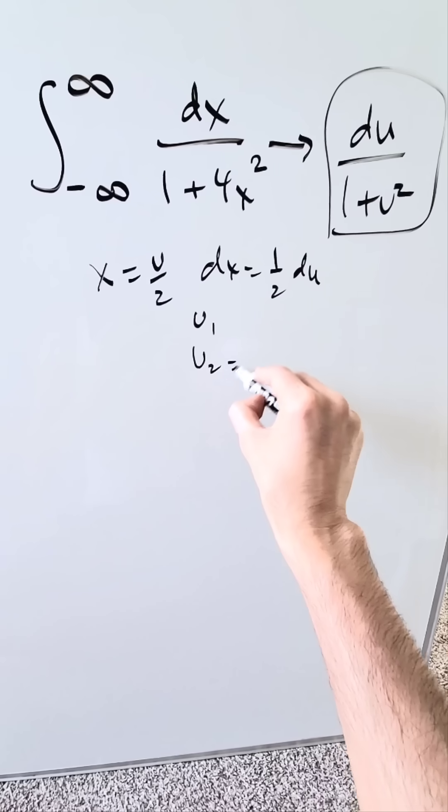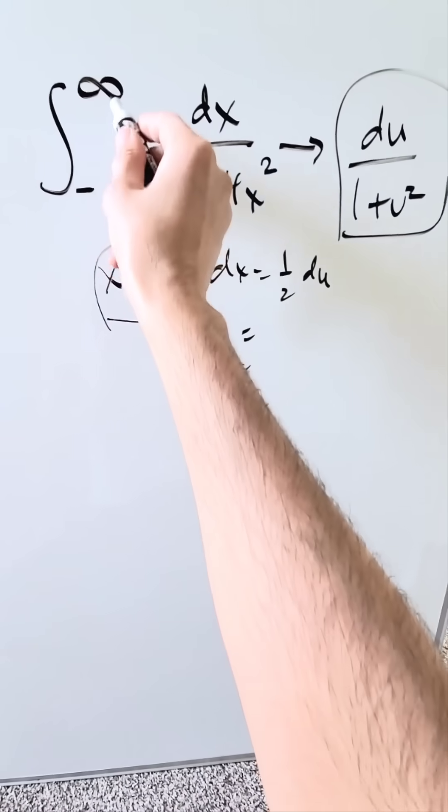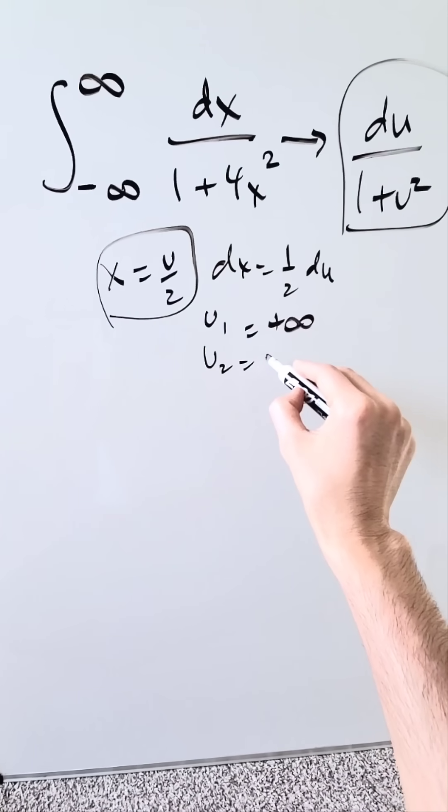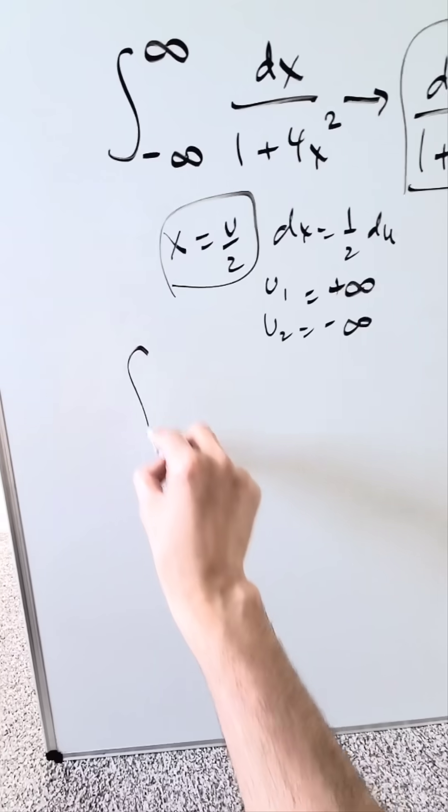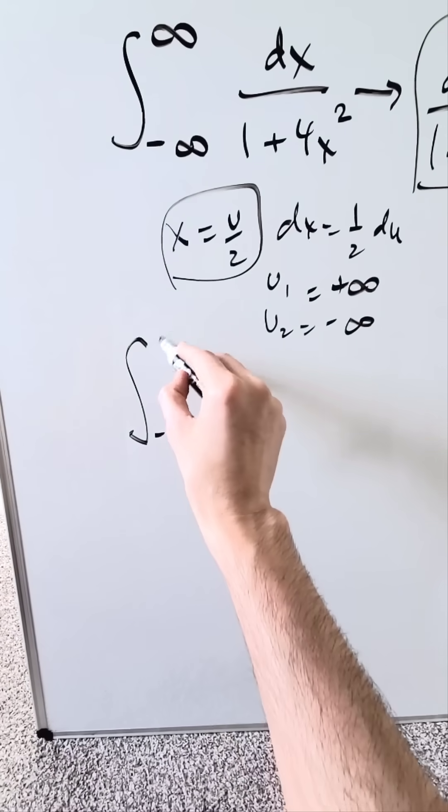Bring in your new limits u1 and u2 with regards to this. Infinity minus infinity coming in, it's rather meaningless. It's still positive infinity and minus infinity. Those will remain as your limits: minus infinity to infinity.